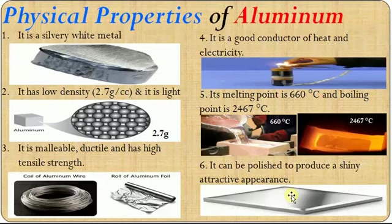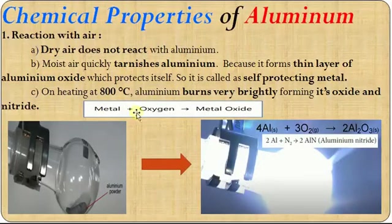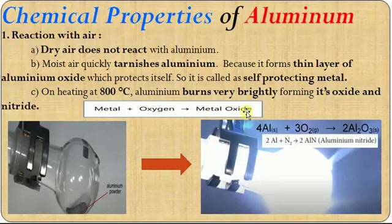Now we are going to learn about the chemical properties of Aluminium. The first chemical property is reaction with air. Dry air does not react with Aluminium. But moist air quickly tarnishes Aluminium. When a metal reacts with oxygen, it forms a metal oxide. Similarly, Aluminium reacts with oxygen to form Aluminium oxide. Since there is also nitrogen in the atmosphere, Aluminium reacts with nitrogen to form Aluminium nitride too.